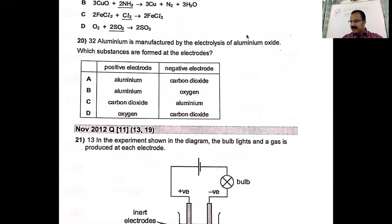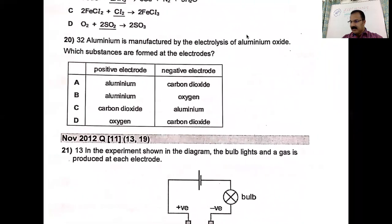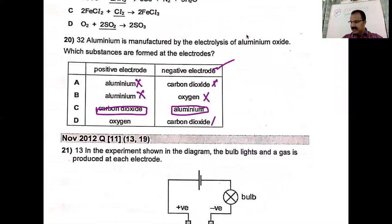Aluminum is manufactured by electrolysis of aluminum oxide — which substances are produced at the electrodes? At the negative electrode (cathode), we get aluminum. At the positive electrode (anode), we get carbon dioxide — that's correct. Carbon dioxide is not produced at the cathode. The rule is metals and hydrogen are produced at the cathode. Aluminum at the negative electrode and carbon dioxide at the positive electrode — so that is correct.